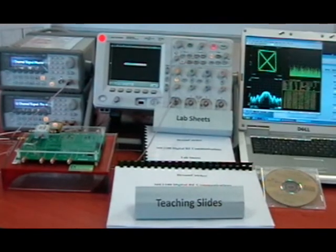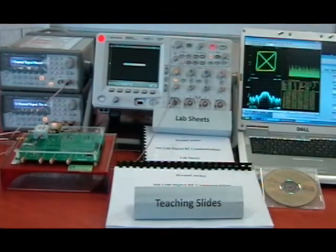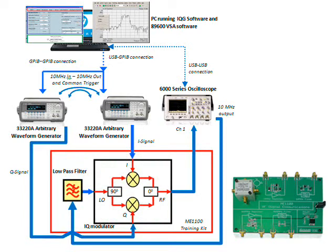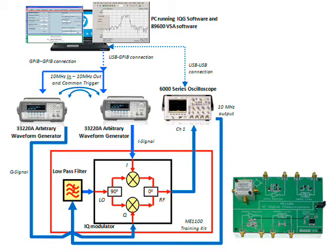This demo lab implements a typical digital IQ Modulation Scheme by using two function generators. The outputs of the function generators are connected to an external IQ Mixer, which is located on the training kit. The RF output of the IQ Mixer is captured by the Agilent DSO 6000 Series Oscilloscope. Finally, the error vector magnitude of the IQ Signal is measured by the 89600 Series VSA software, and all of this is controlled through the automated IQ Signal Generation Software on the computer.